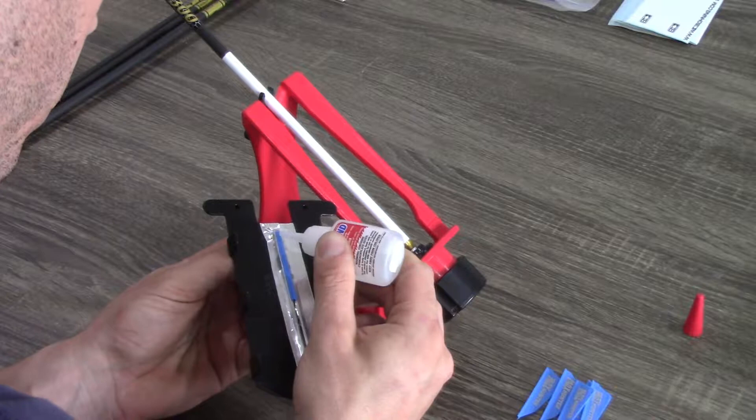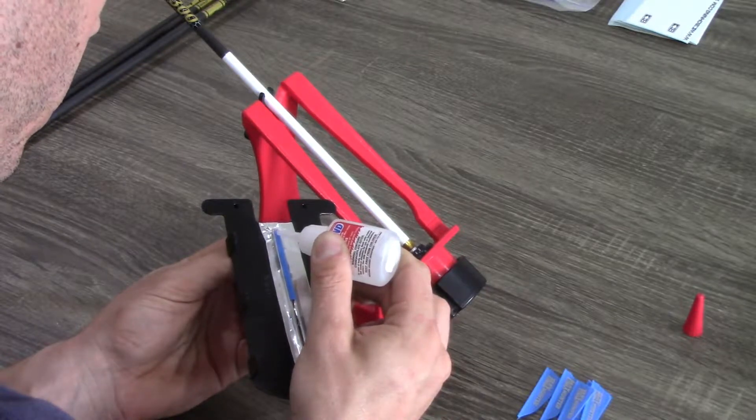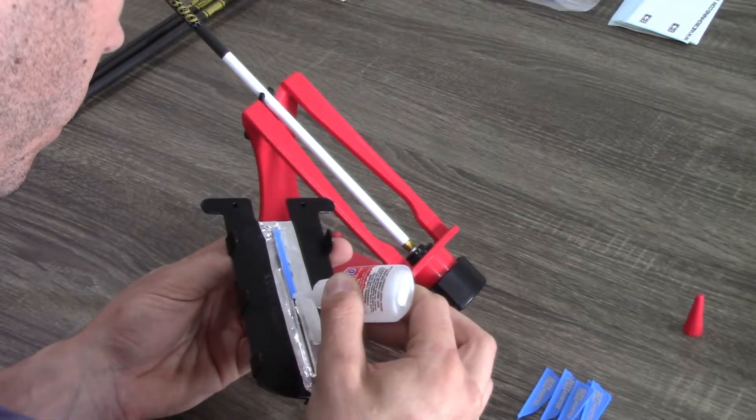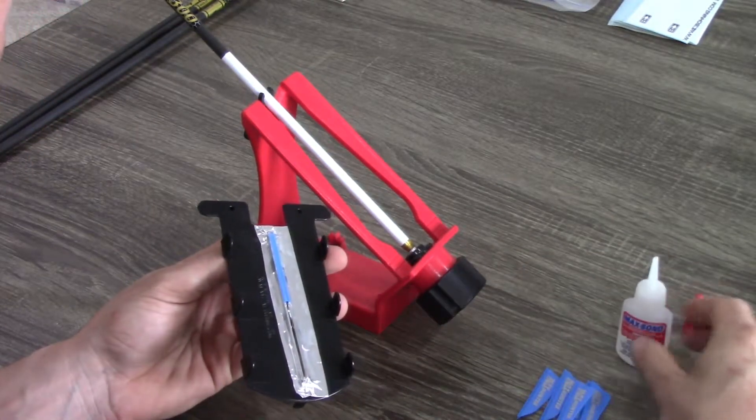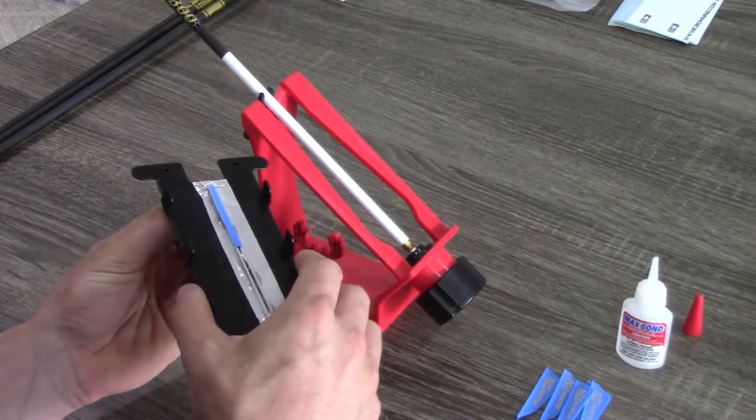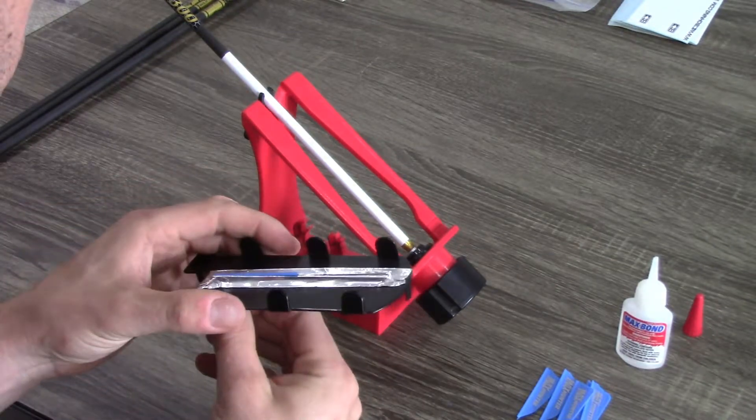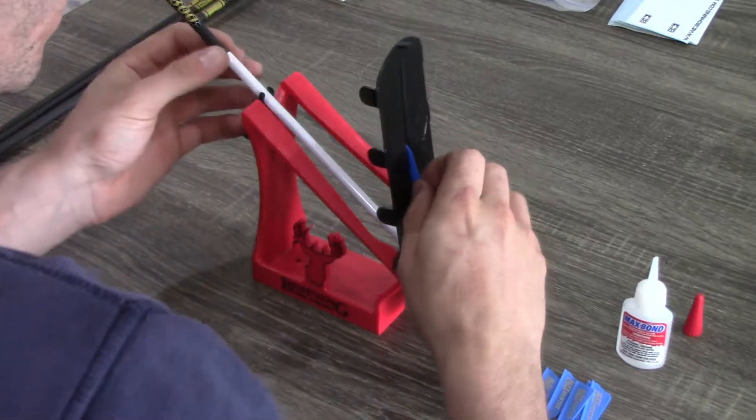So I'm just going to put a thin bead right along this vein. I always end up putting too much, but that's okay. I can always wipe it off when we're done. I'm just going to hold the vein firmly in the clamp here, and then I'm going to set it in the jig and press down.